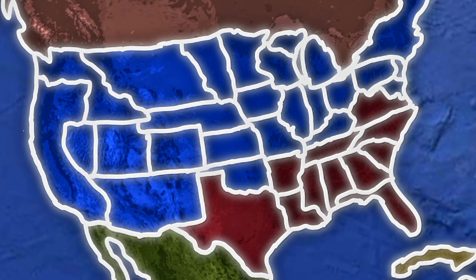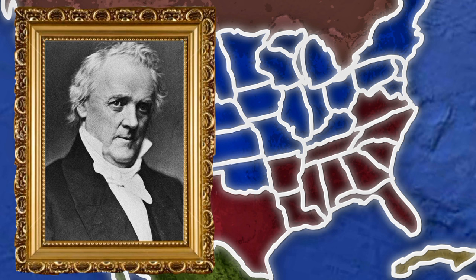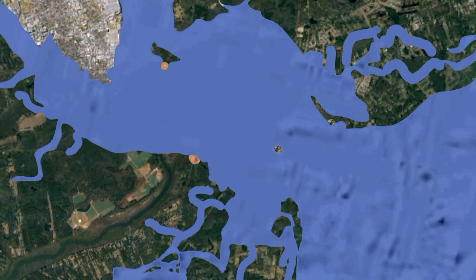The remaining eight slave states declined to join the Confederacy. The seceding states seized federal properties within their boundaries, including buildings, arsenals, and fortifications. President James Buchanan protested but took no action, concerned that an overt act could cause remaining slave states to leave the Union. While he thought no state had constitutional authority to secede, he could find no constitutional authority for him to act to prevent it.